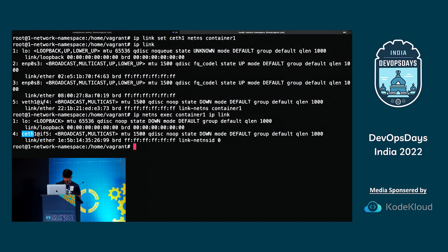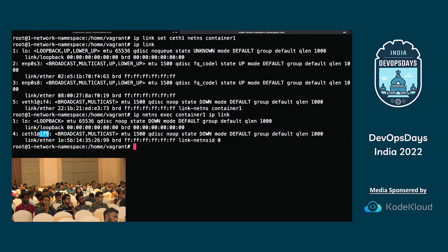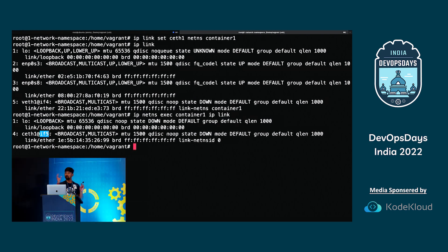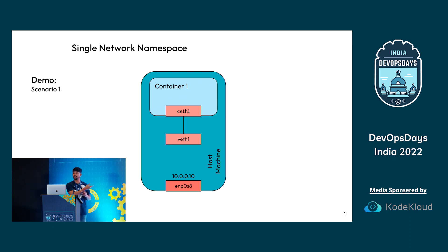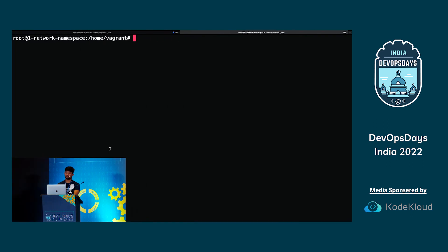Now I need to send packets from the host to container one, but I don't have an IP address yet. So first I'll add an IP address: IP netns exec container1 IP address add 172.16.0.2/24 dev ceth1. Running IP address inside container one shows ceth1 now has that IP address. The network part is 172.16.0 and the host portion is the last octet.